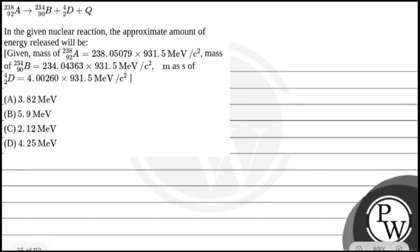Hello, let's read this question. The question says in the given nuclear reaction, the appropriate amount of energy released will be, and the given mass is as shown. Our given options are: option A, 3.82 mega electron volt; option B, 5.9 mega electron volt; option C, 2.12 mega electron volt; and option D, 4.25 mega electron volt.